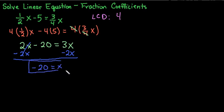So we are finished. We have a solution for x, and then remember that we always want to check. We always want to make sure, does our answer make sense back in the original equation? So I would take 1/2 of negative 20 minus 5 and see if it is equal to 3/4 of negative 20.